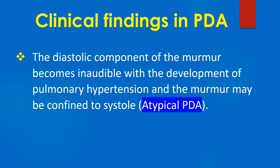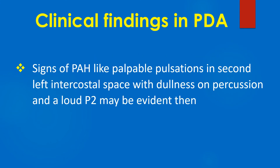The diastolic component of the murmur becomes inaudible with the development of pulmonary hypertension, and the murmur may be confined to systole. This is sometimes called an atypical PDA. Signs of pulmonary hypertension, like palpable pulsations in the second left intercostal space with dullness on percussion and a loud P2, may be evident then.